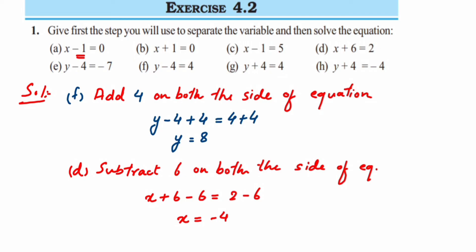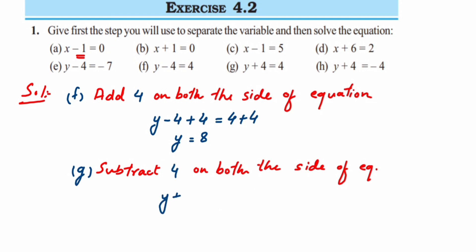Part (g): y plus 4 is equal to 4. We subtract 4 on both sides so that plus 4 minus 4 becomes 0. y plus 4 minus 4 is equal to 4 minus 4. On the left-hand side plus 4 minus 4 is 0, and on the right-hand side 4 minus 4 is also 0, so y is equal to 0.